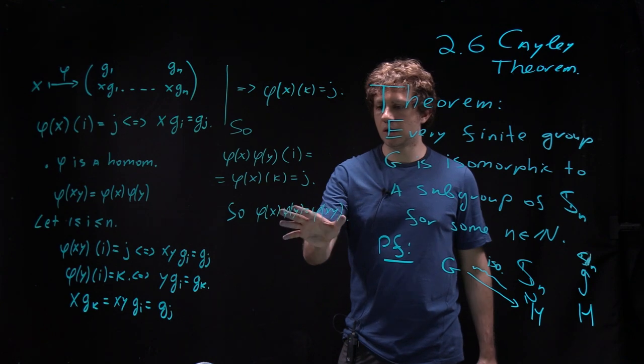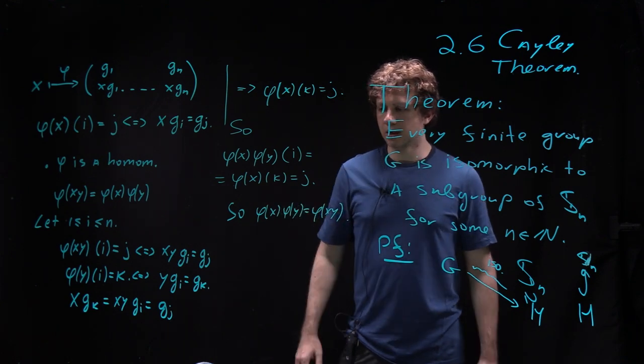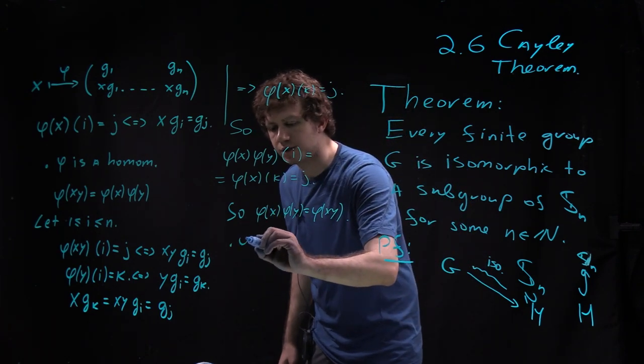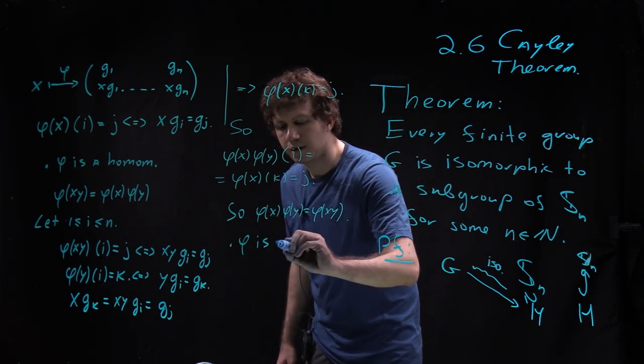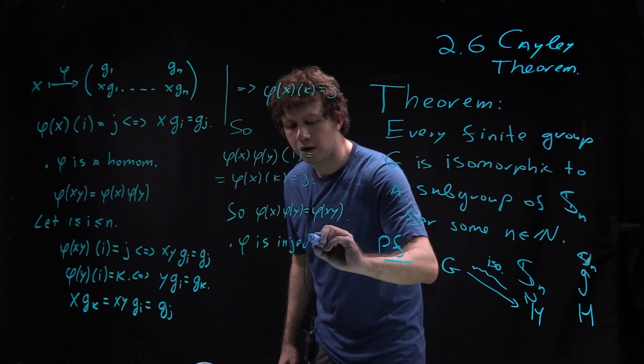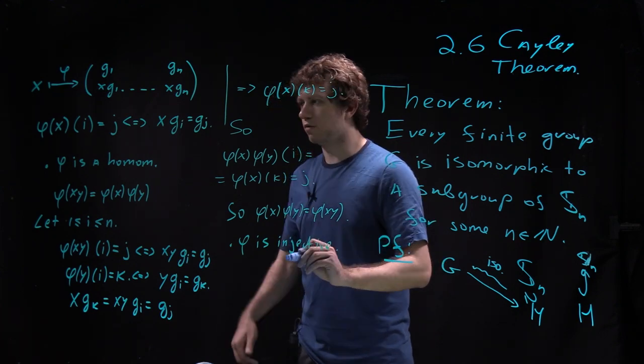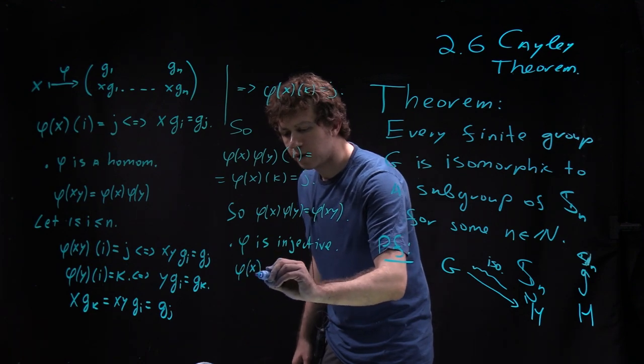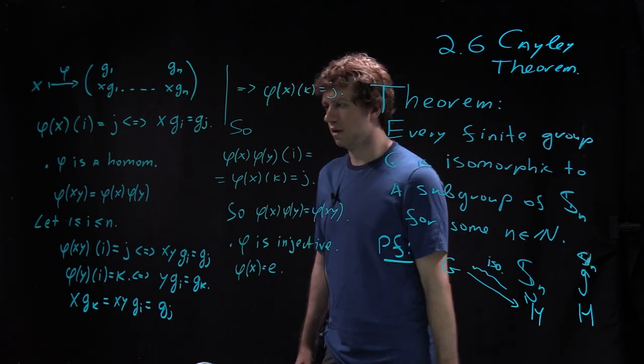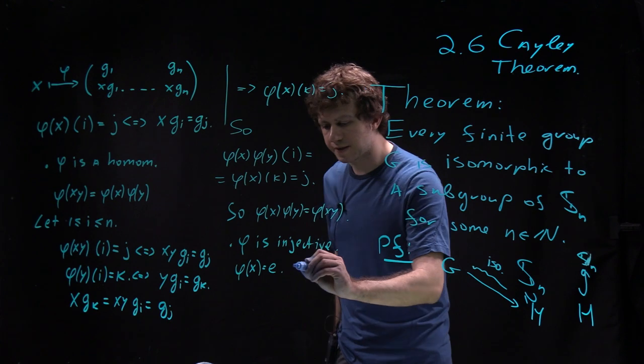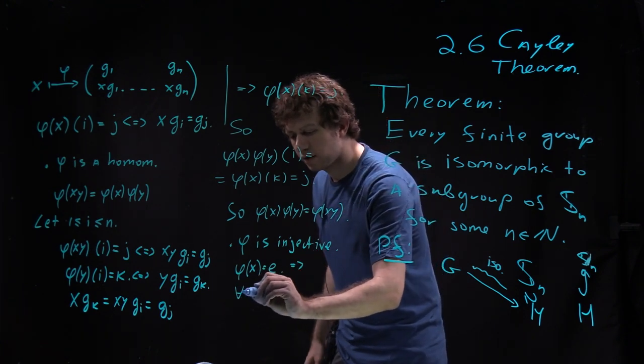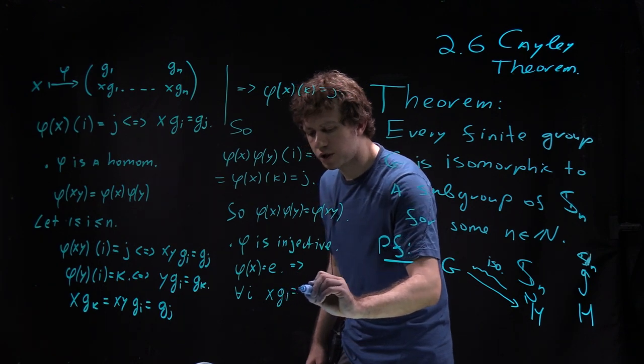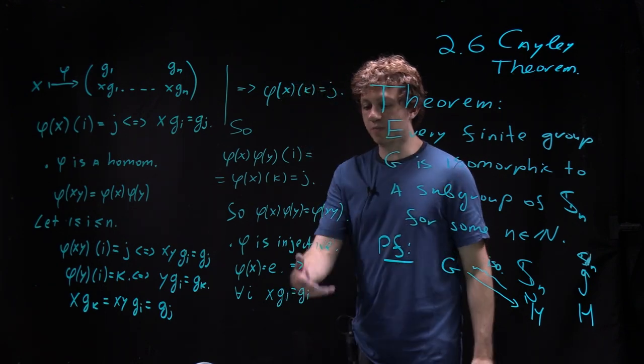So next part is I want to show that phi is injective. And this is even easier. So let's just imagine phi of X equals identity. This means that for every i, X times g_i equals g_i.